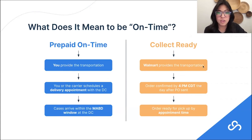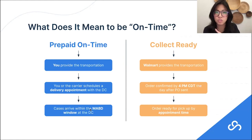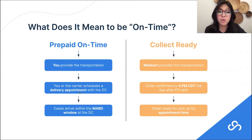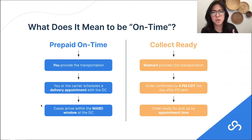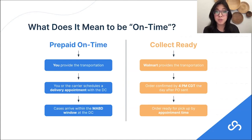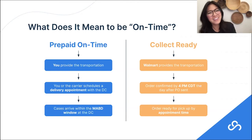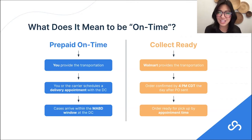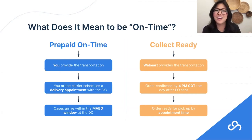For on-time best practices: make sure your carrier is scheduling a delivery appointment with the DC and that it is arriving within the MABD window. This is honestly very low-hanging fruit. A lot of teams, especially if working with a smaller or more regional carrier, may not know that Walmart has MABD window requirements. We work with a surprising number of prepaid suppliers whose carriers are not even setting appointments within the MABD windows. If you're setting an appointment before or after the MABD window, you're already a step behind and there's no way you'll land within that window. You need to make sure you're doing analysis on this and that your carriers are actually doing what they should be doing.